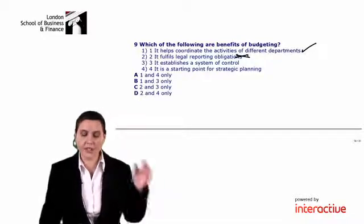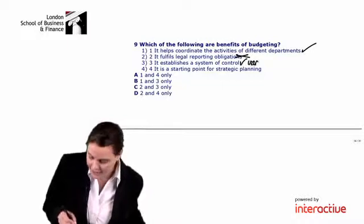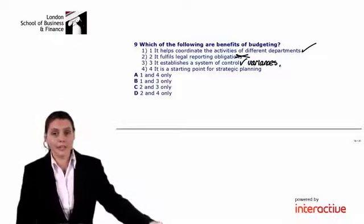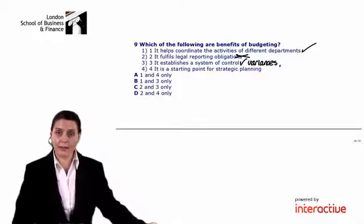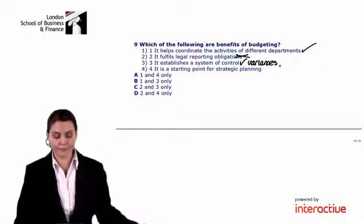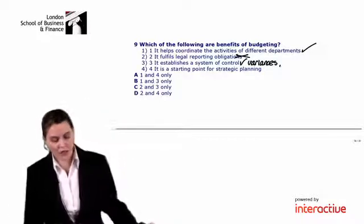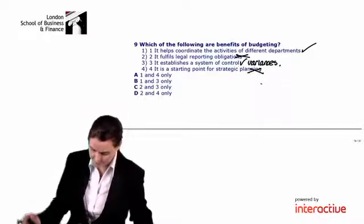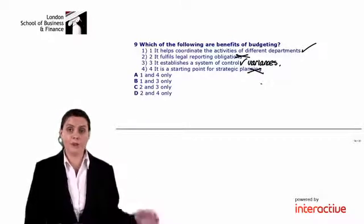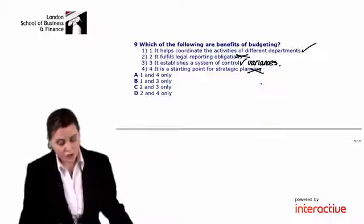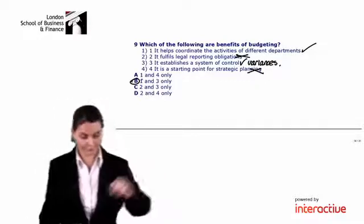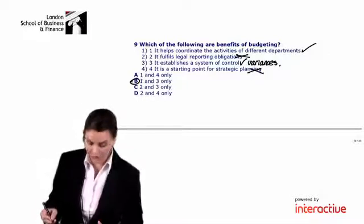Number three: it establishes a system of control - yes, remember variances. We set our budget or targets at the start of the year, then during and at the end of the year we can look to see whether everyone achieved their cost budgets or whether people were spending far too much money. Option four: budgets are a starting point for strategic planning - no. Our strategic planning comes first and then our annual budgets should support whatever our strategic objectives are. So the benefits are options one and three - the correct answer is B.